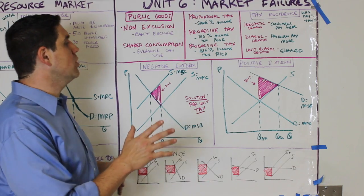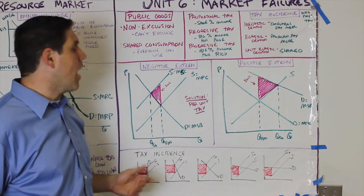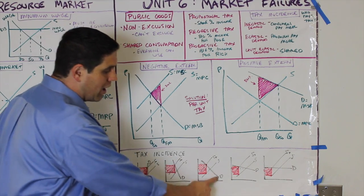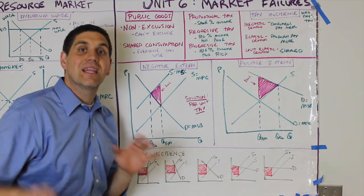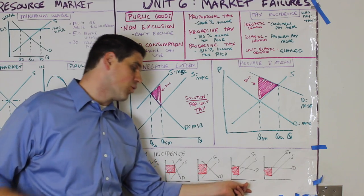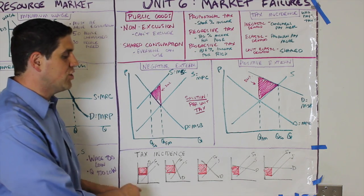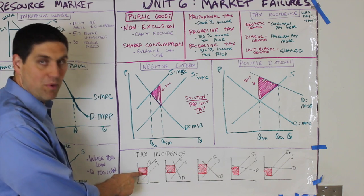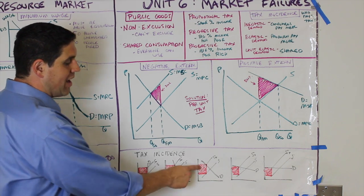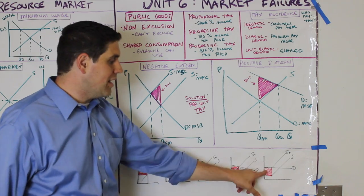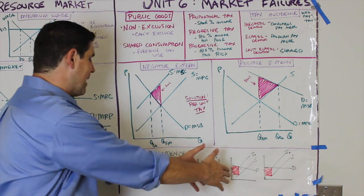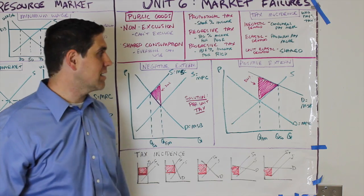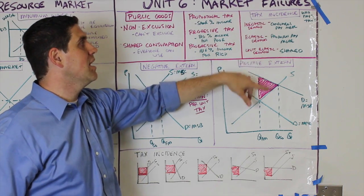A regressive tax, like a sales tax, is a set amount — $1 is proportionally more for a poor person. A proportional tax means everyone pays the same percentage, like a flat 10% income tax. The next concept is tax incidence. With perfectly inelastic demand, consumers pay the entire tax. With inelastic demand, consumers pay most of the tax. With unit elastic demand, they share equally. With elastic demand, producers pay most. With perfectly elastic demand, producers pay all. The rule: as demand becomes more inelastic, consumers pay more; as demand becomes more elastic, producers pay more.